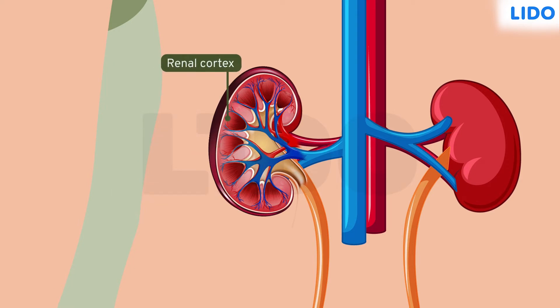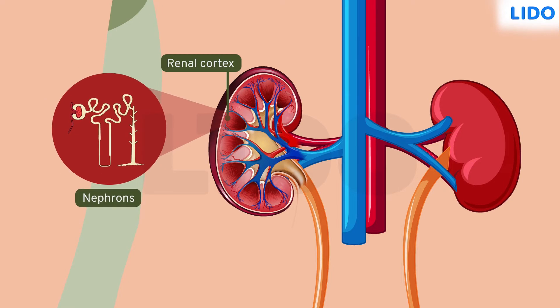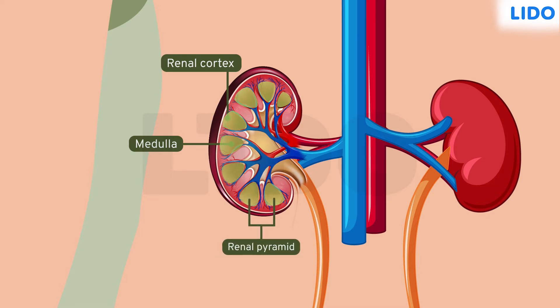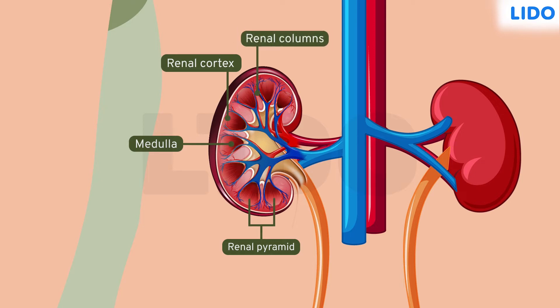The renal cortex is granular as it contains a network of capillaries and millions of filtering units called nephrons. The medulla is made of many pyramid-shaped structures called the renal pyramid. On average, there are eight renal pyramids in each kidney. In between the pyramidal structures are spaces called renal columns. The tip of the renal pyramids point towards the renal pelvis.